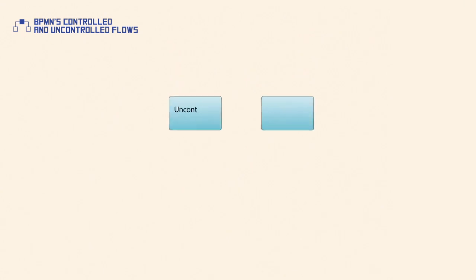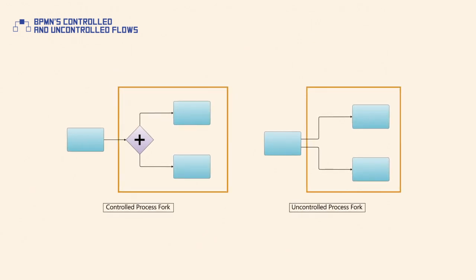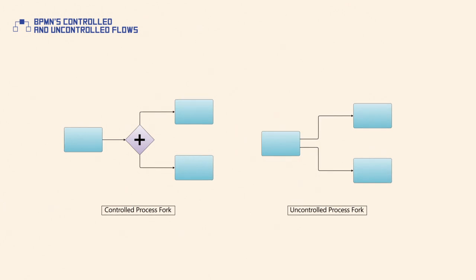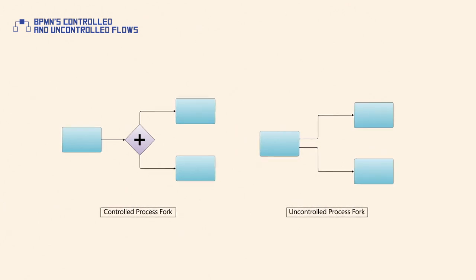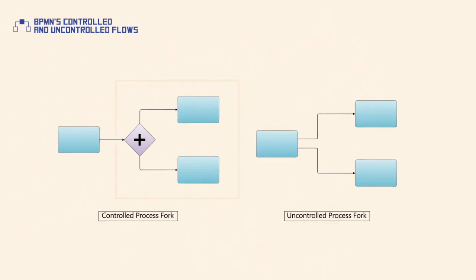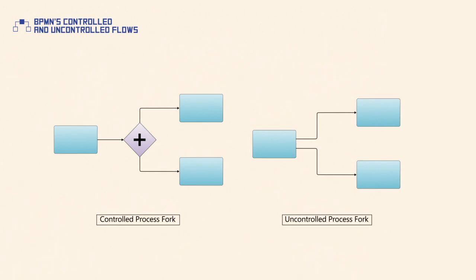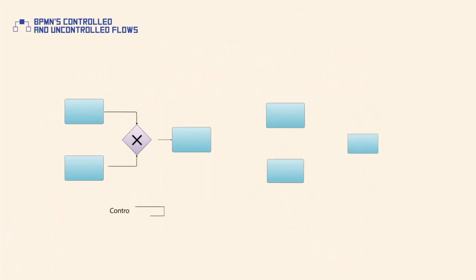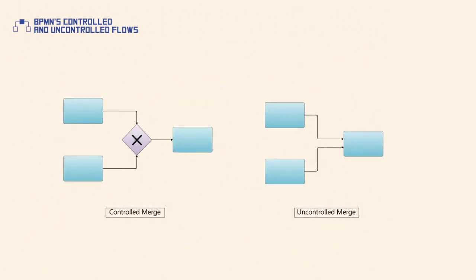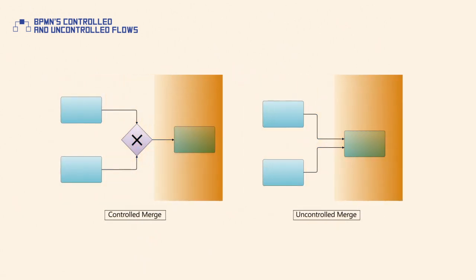Both uncontrolled and controlled flows can be used for process forks and process mergers. A process fork refers to the dividing of a process path into two or more parallel paths. It represents a place in the process where activities can be performed concurrently rather than sequentially. A process fork can be modelled with a parallel gateway or with multiple outgoing sequence flows. In contrast, a process merge refers to a point in the process where two or more alternative sequence flow paths are combined into one sequence flow path.